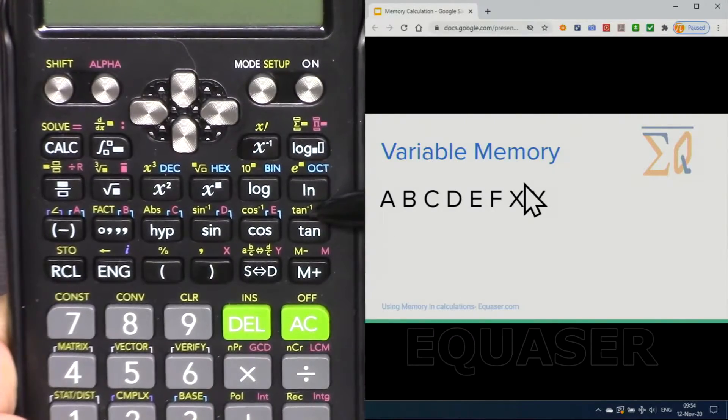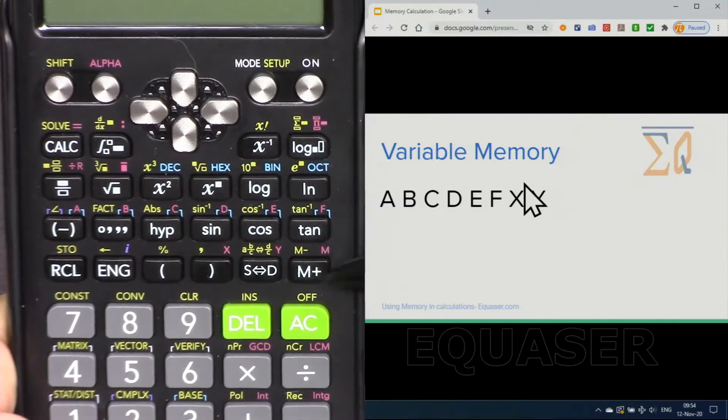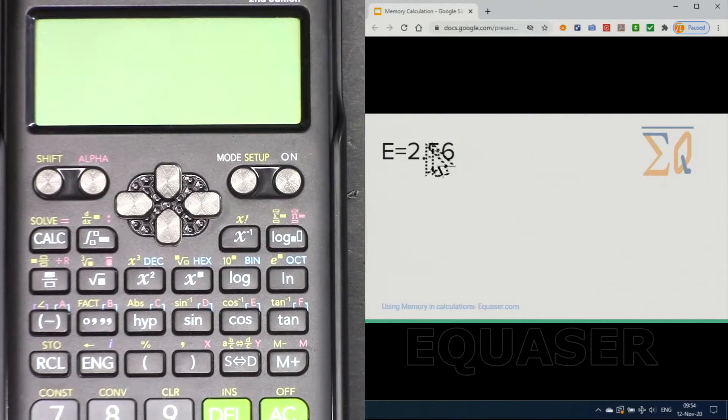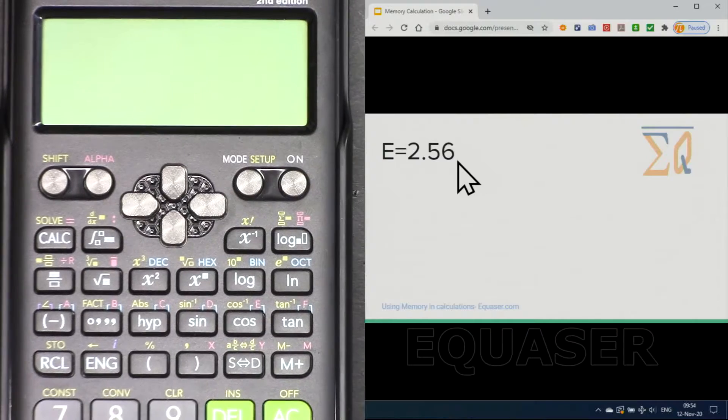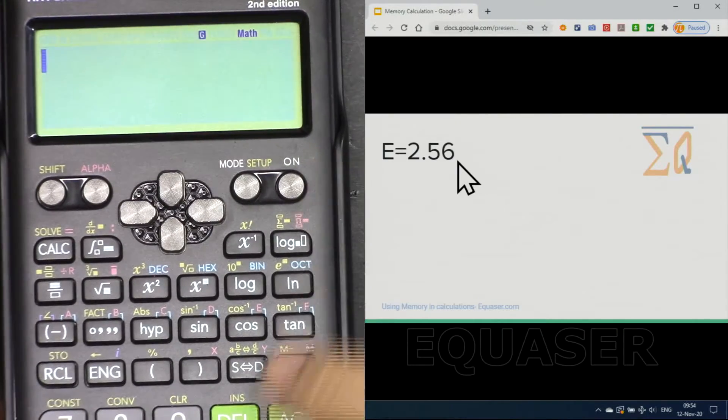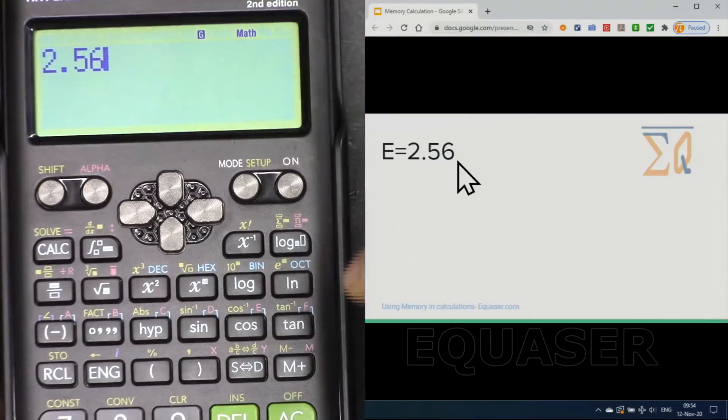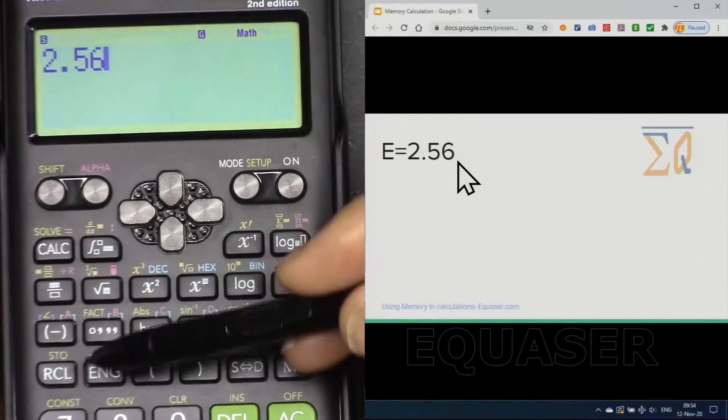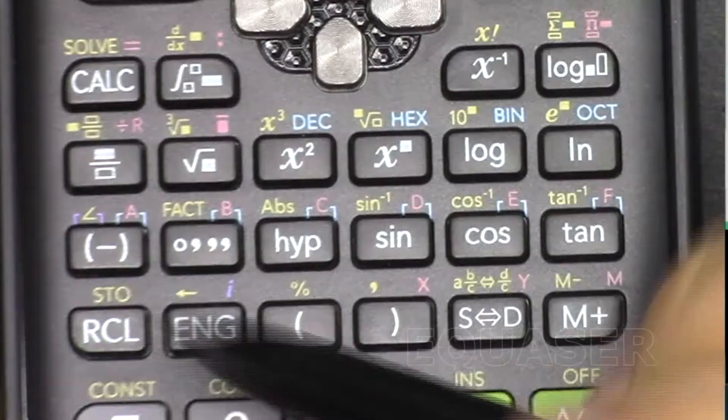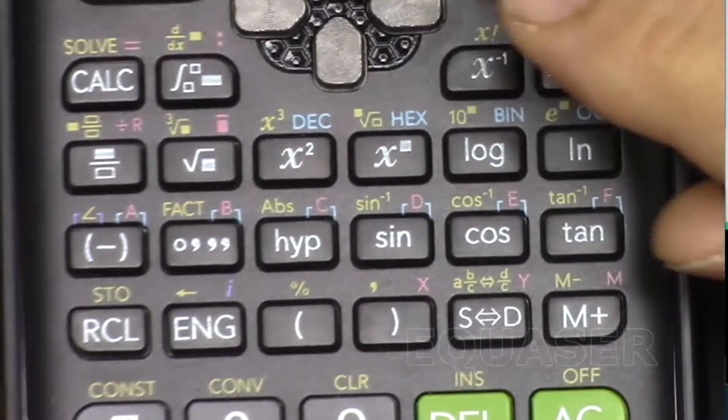Let's say you want to store 2.56 into memory and later on use it. 2.56, whatever is on the screen press shift and then STO which refers to store and as you can see STO is on the screen.